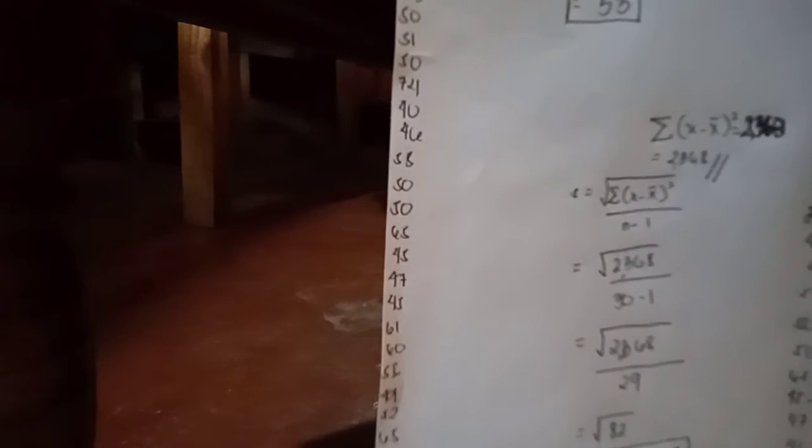And so, we have square root of 2,368 divided by 29 is equal to square root of 82, or approximately 9.5 or 9 kilograms.